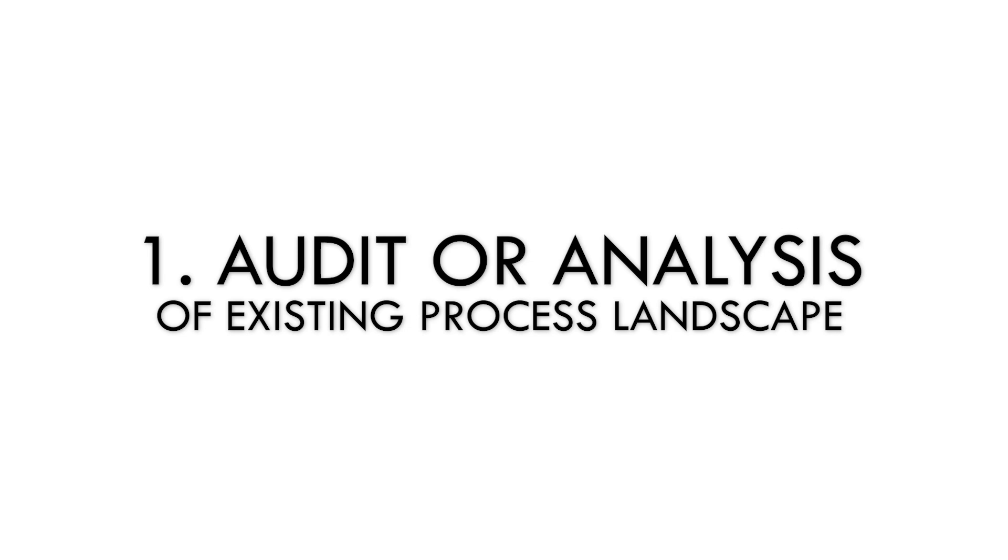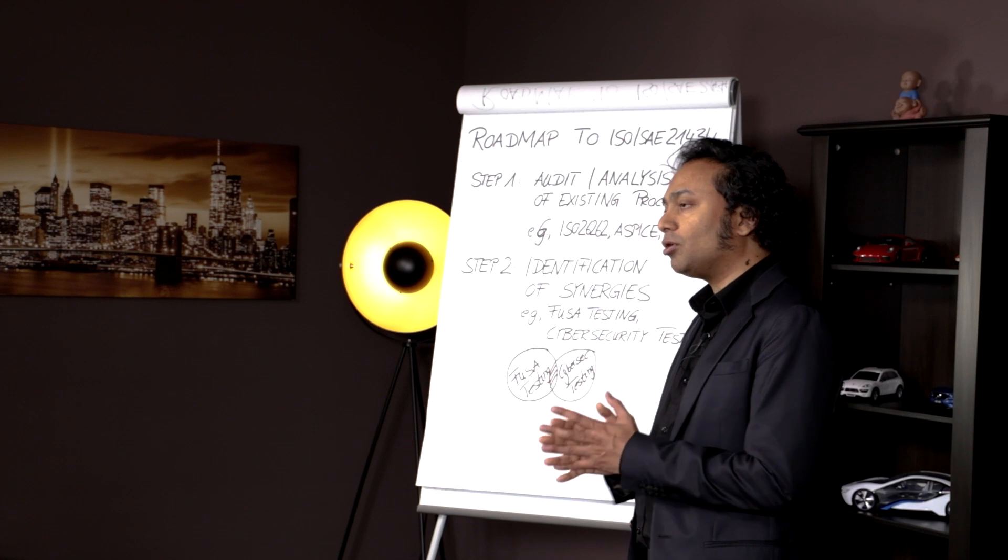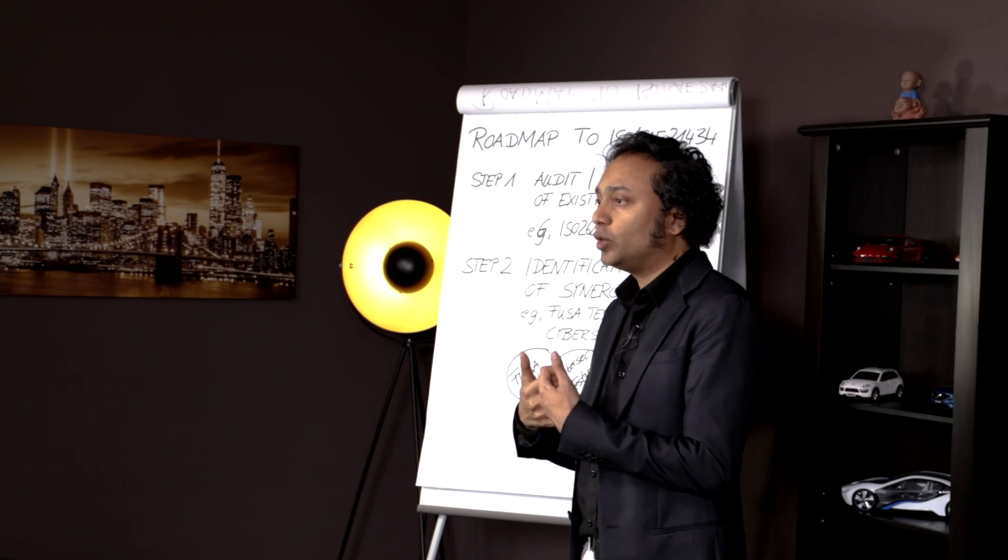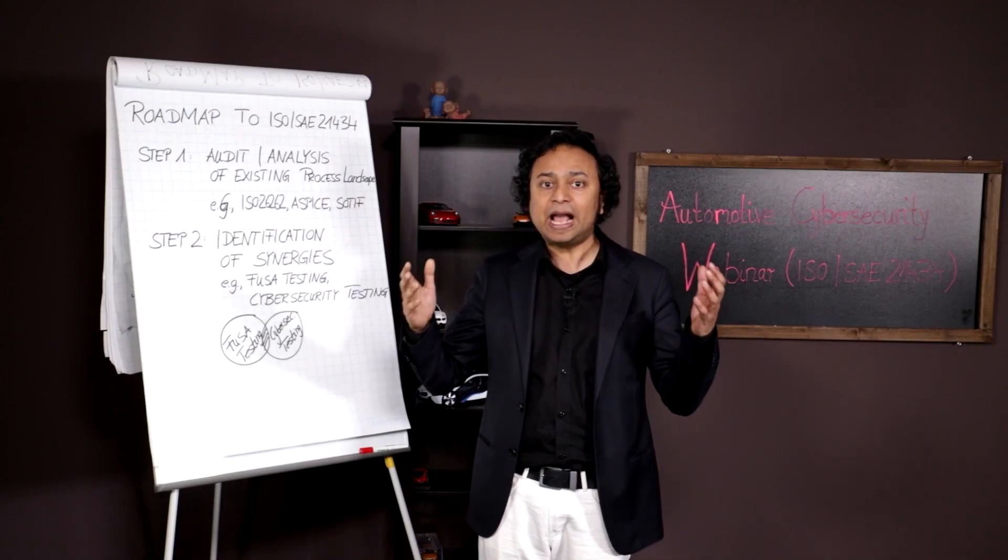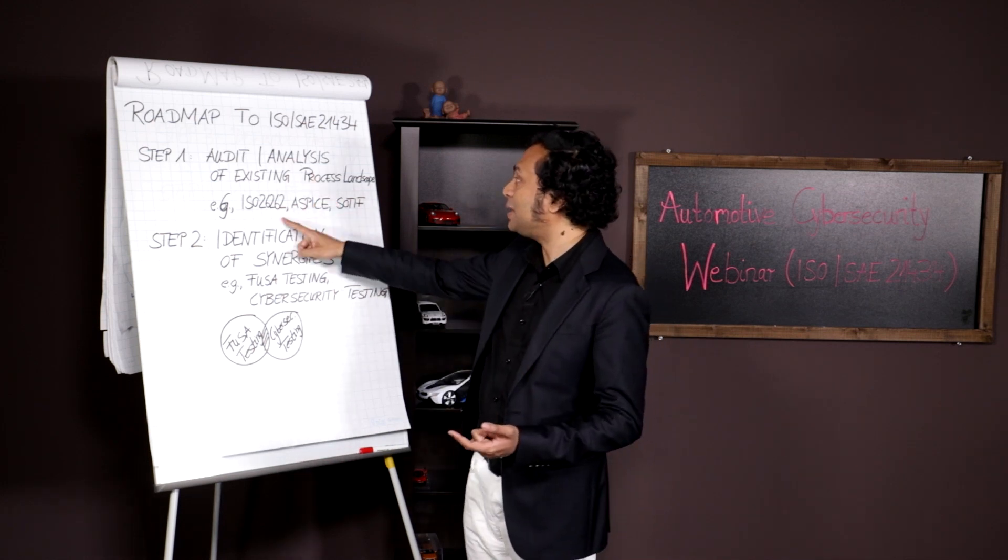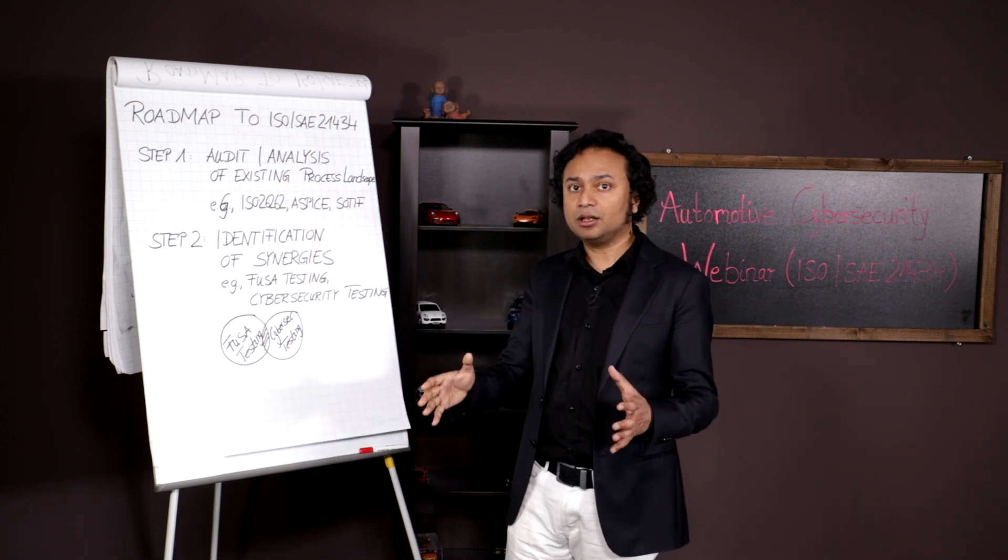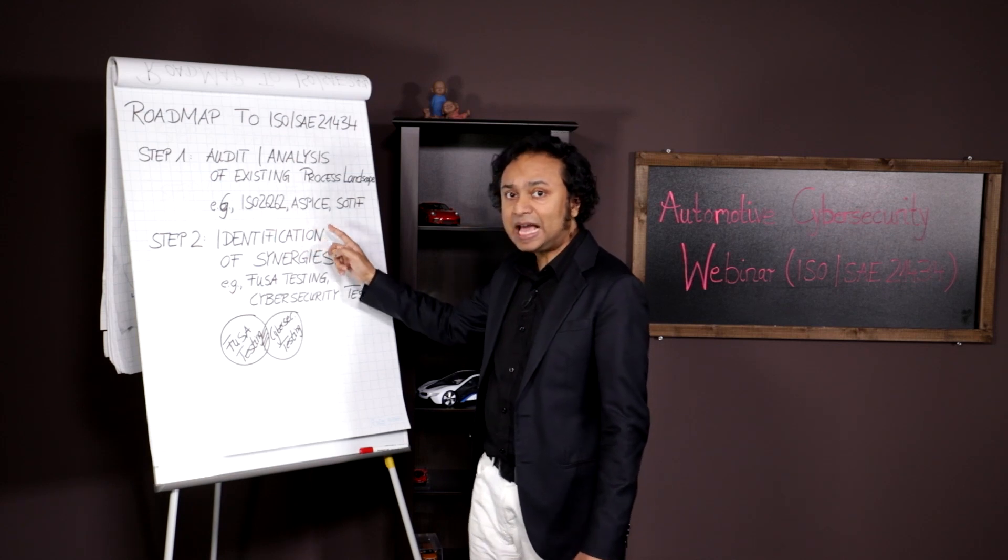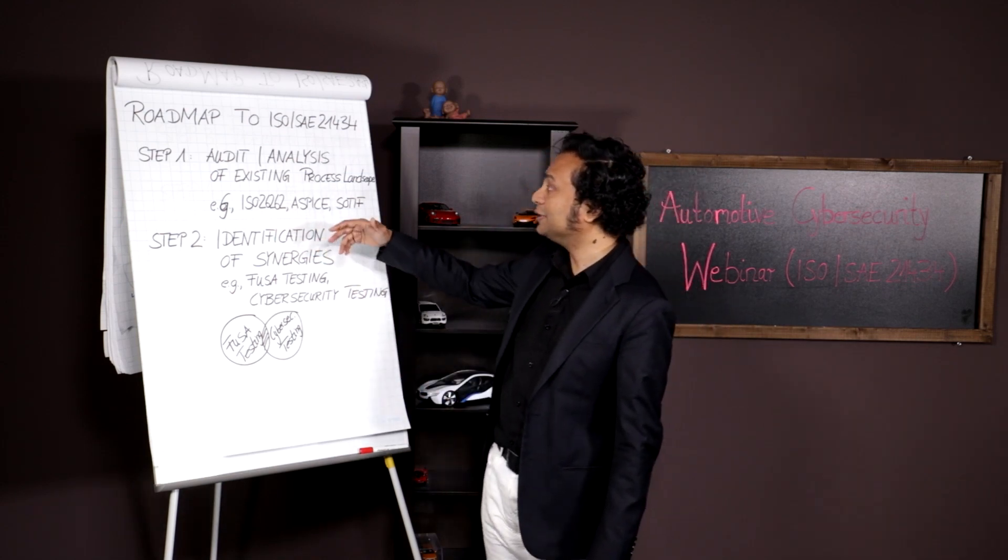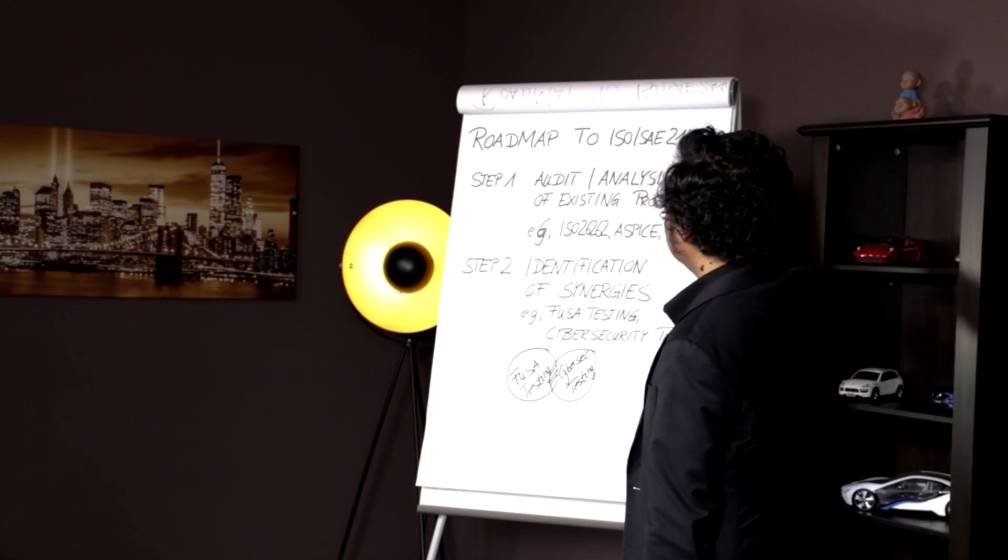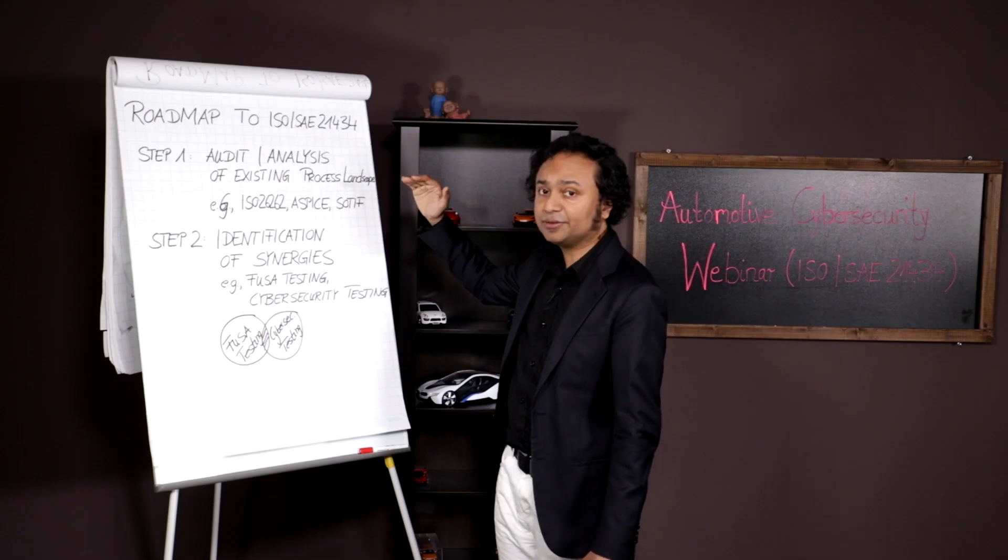The first step that you should take care of is you should do an audit or an analysis, sometimes we call it gap analysis of the existing process landscape. So this is very important. Most of our clients come to us and say, we need to be compliant with ISO 21434. But what happens is we find out they're not compliant with ASPICE. They're not compliant with ISO 26262. ASPICE is going to be the fundamental of your process landscape. If you're not compliant to that in automotive, you're going to have a hard time complying with ISO 26262 or ISO 21434.